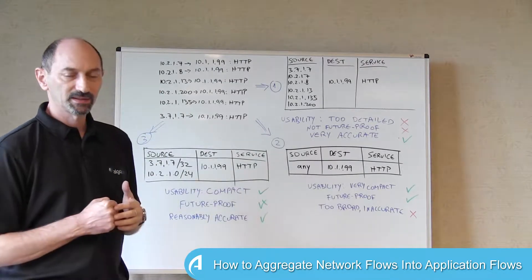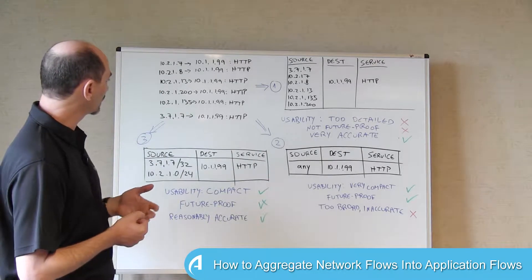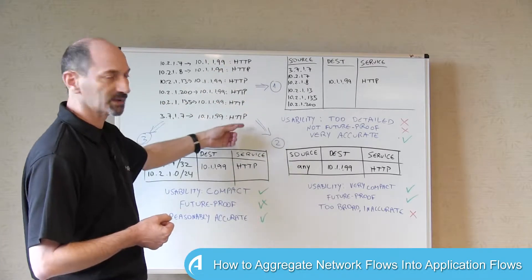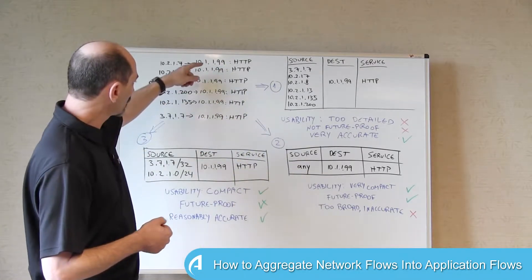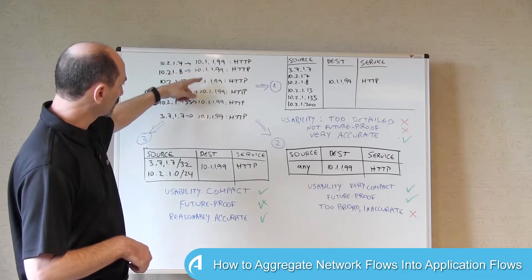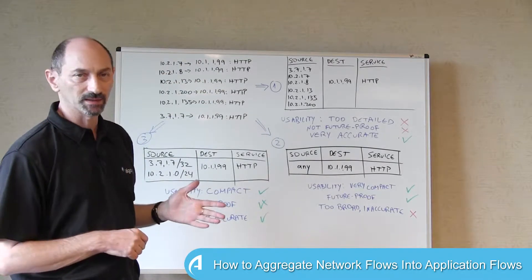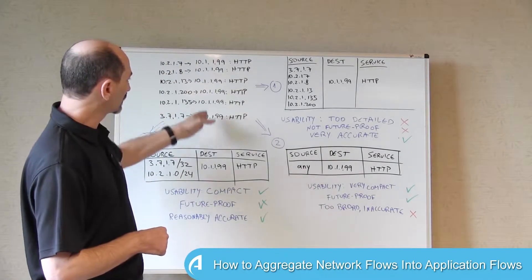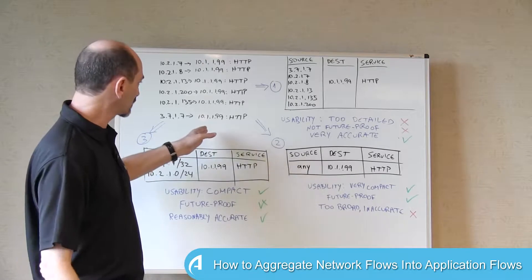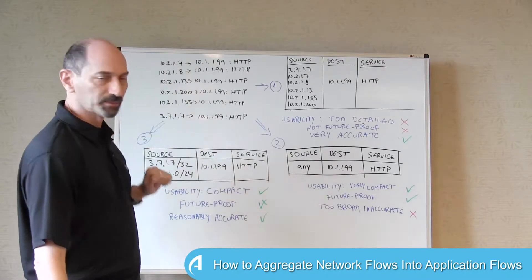If we look at this, an easy observation to make is that you can see a lot of repetition in the service. And also here in this example, all the destinations are the same. It's the one IP address of all these destinations, and there are multiple sources.